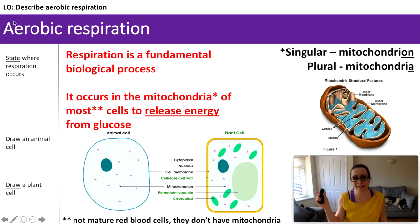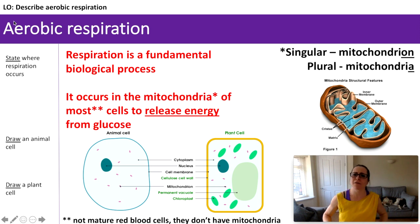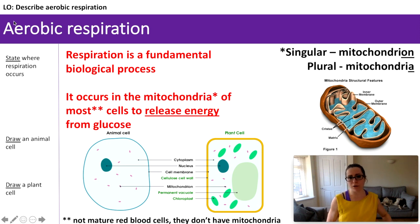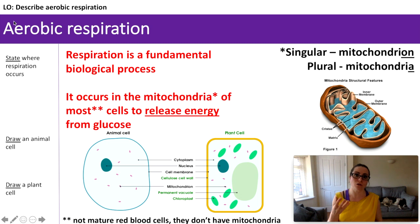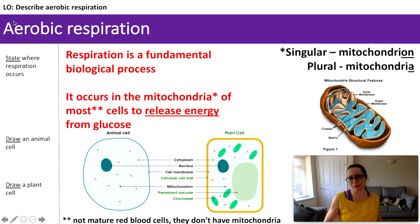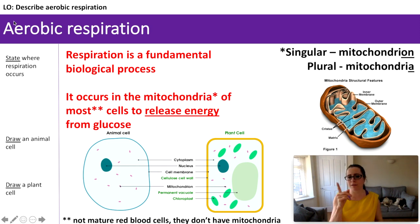With plant cells you've also got a cell wall. This is made of cellulose — the stuff we can't digest. We don't have the enzyme to digest cellulose; cows do, which is why they eat grass, but humans can't. This gives the plant cells structure and support — this is why plants are crunchy. Humans are not crunchy; we do not have cell walls.